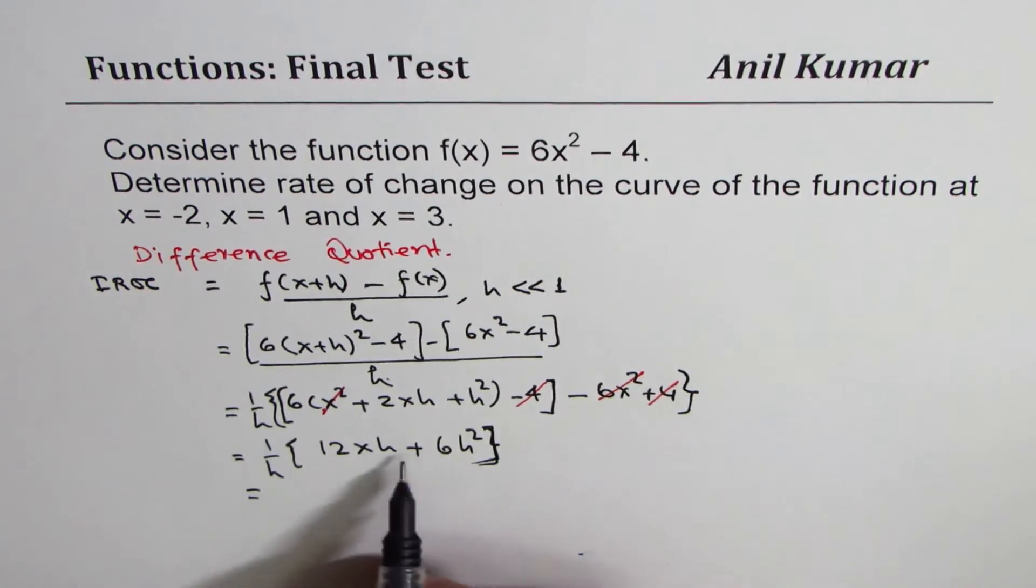Now, then, we can take h common. So once you take h common, we get h/h. And here we get 12x + 6h.